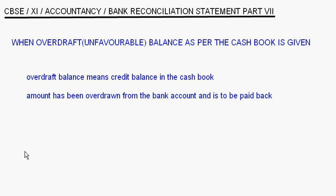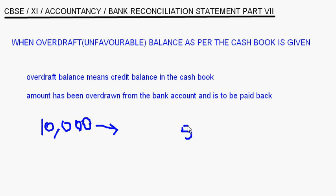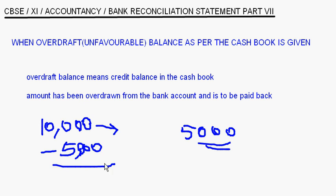Let me take a small example. Suppose you have an overdraft balance of ten thousand rupees — this means we have to pay ten thousand rupees to the bank. If you deposit checks worth five thousand rupees, you are depositing money into the bank, so the overdraft balance comes down by five thousand, and the overdraft balance is now only five thousand rupees.